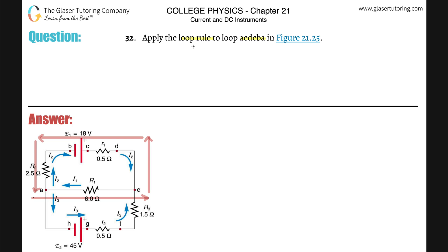So loop rule, what is it? Well, loop rule simply says that the sum of all of the potential rises in a circuit minus the sum of all the potential falls will equal zero. That's what loop rule says.